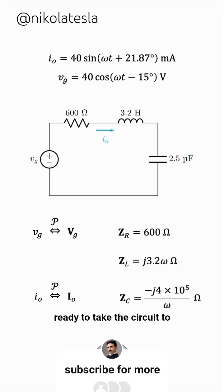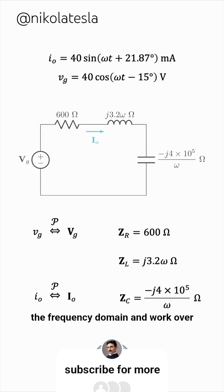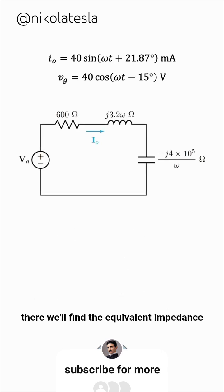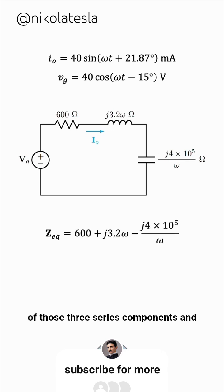We're now ready to take the circuit to the frequency domain and work over there. We'll find the equivalent impedance of those three series components, and the key thing here is that this circuit impedance is the ratio of the phasor voltage to the phasor current.